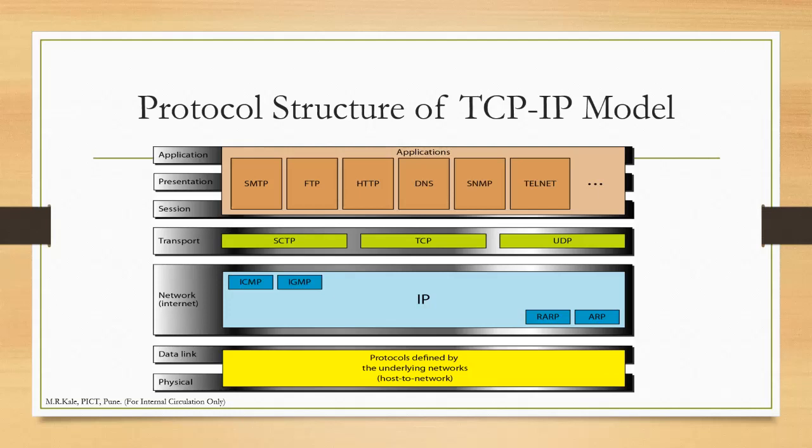Moving on, the upper layer which corresponds to the network layer, we have a main protocol called IP, that is Internet Protocol. There are supporting protocols as well: ICMP, IGMP, RARP, and ARP. We are going to study each one of them in detail in various units.